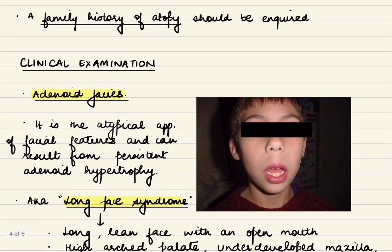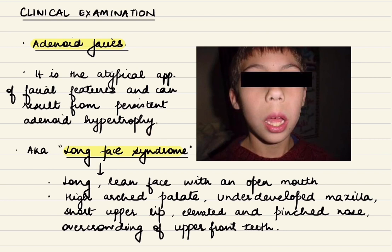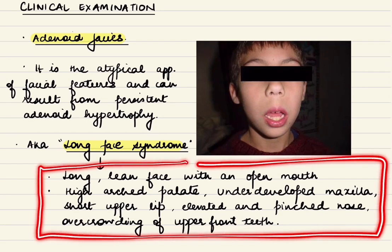On clinical examination, the first thing noticed in persistent adenoid hypertrophy is adenoid facies, also known as long face syndrome — the atypical appearance of facial features resulting from persistent adenoid hypertrophy. The patient will have a long lean face with an open mouth due to persistent nasal obstruction, high arched palate, underdeveloped maxilla, short upper lip, elevated and pinched nose, with overcrowding of upper front teeth.